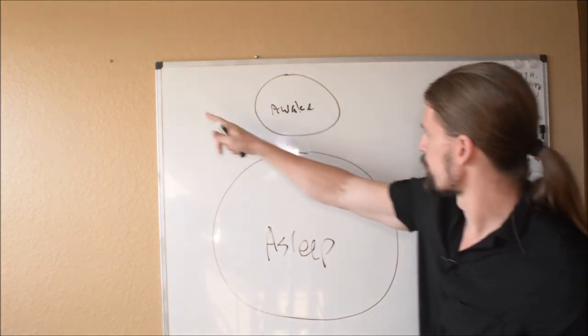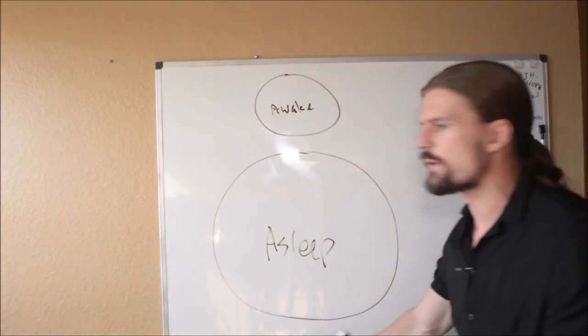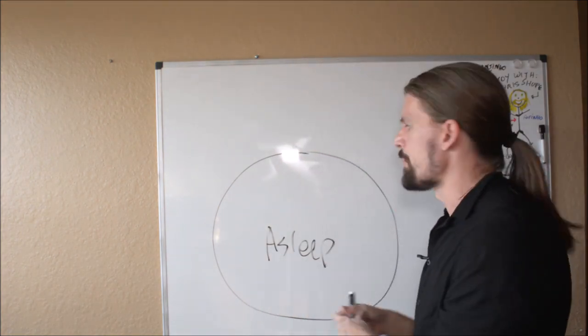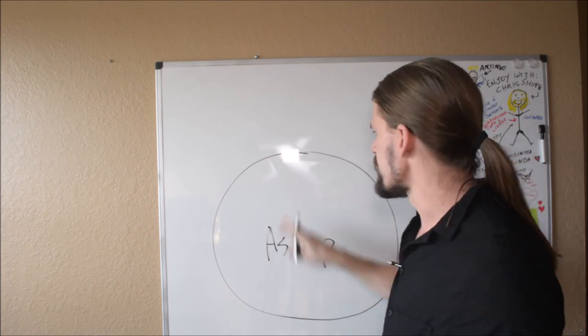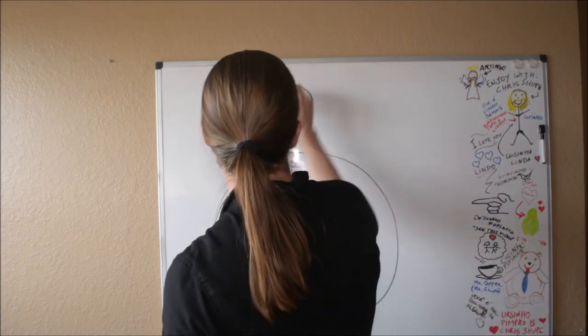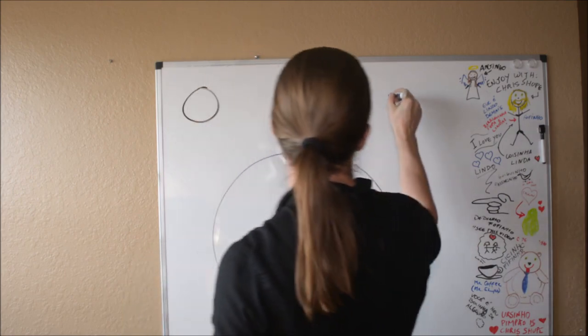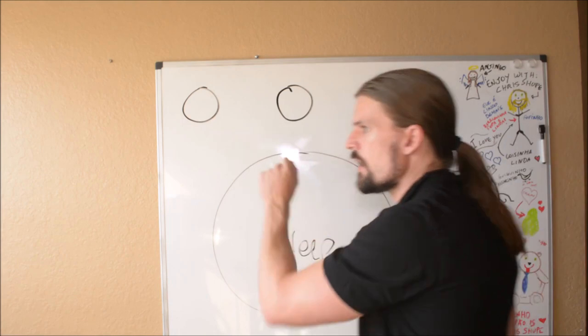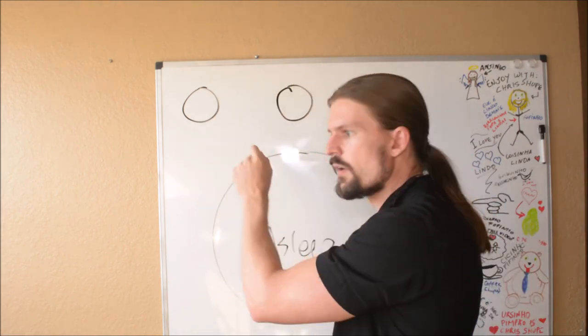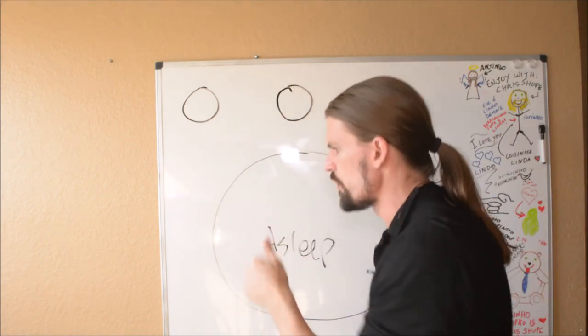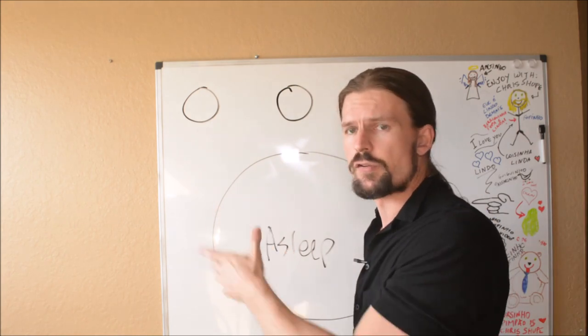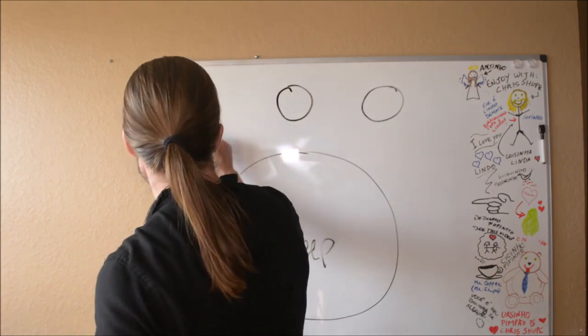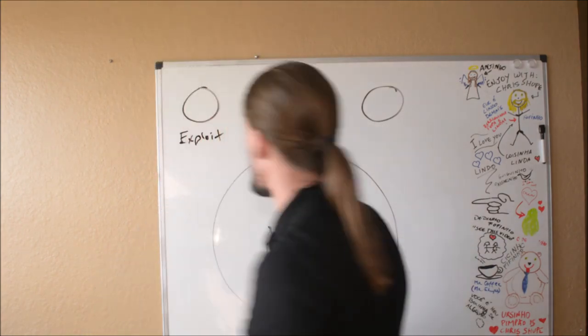And so these people are what I call awake. Now, I can split up this awake category into three separate categories. And I'm going to split these up based on the way that they interact with the asleep people. So we'll have three smaller circles here that represent the three different categories. And so, the first category over here are the people who seek to use their superior knowledge to manipulate, control, and exploit the people who are asleep.